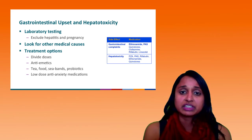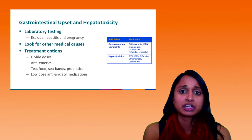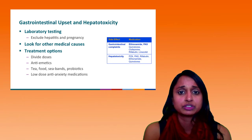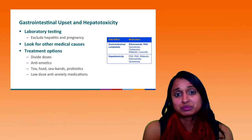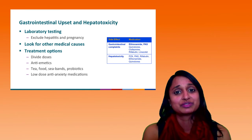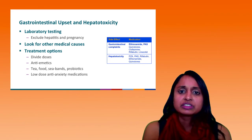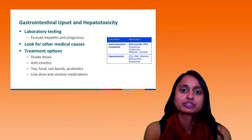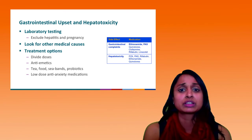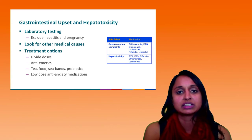You can try dividing the medications — for example, PAS or ethionamide — splitting those into one dose in the morning and one dose in the afternoon. You could also try giving medications in the evening so patients can sleep through some of the side effects. You could try an anti-emetic medication, which sometimes works depending on the patient. Other options include ginger tea, motion sickness bands called C-bands, and probiotics. Some patients just have anticipatory nausea — they walk into the clinic and get sick. In those situations, you can try a low-dose anti-anxiety medication.